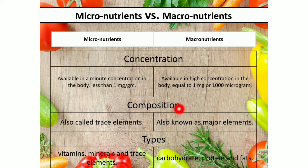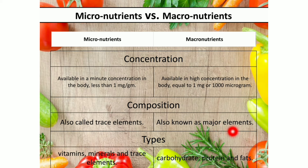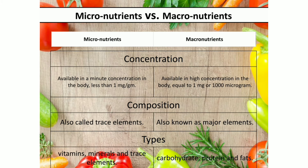On the basis of composition, micronutrients are also called trace elements, as they are present in trace amounts in our body. Macronutrients are called major elements, meaning they are present in greater quantities. In terms of types, micronutrients include vitamins, minerals, and trace elements, while macronutrients include carbohydrates, proteins, and fats.